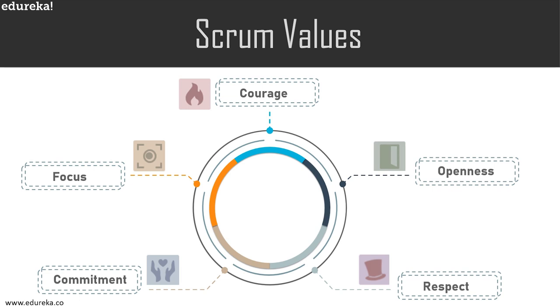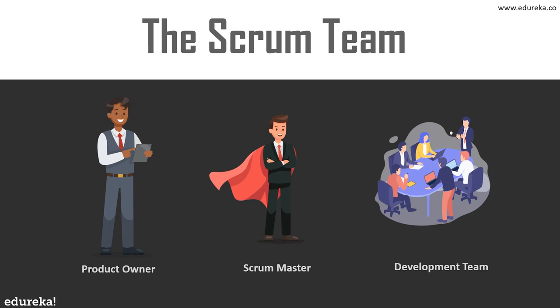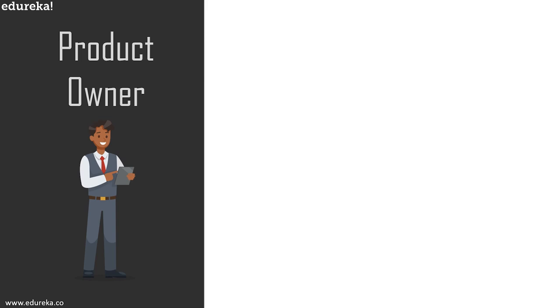These values are critical to the successful implementation of Scrum in any organization. The Scrum framework is made up of three distinct categories: roles, events, and artifacts. The three core roles in Scrum are the product owner, the Scrum master, and the development team. Let's check out who they are and what their responsibilities are.